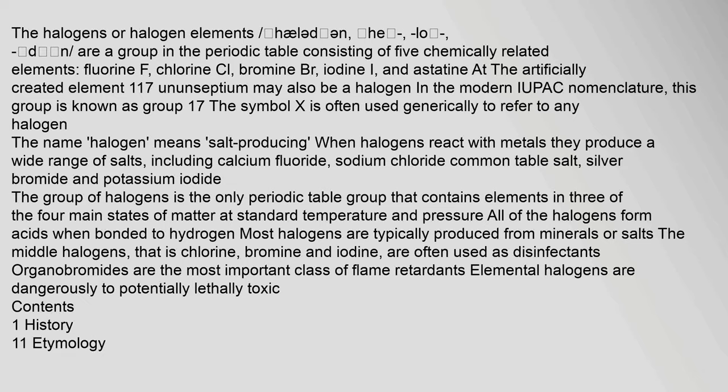The halogens or halogen elements are a group in the periodic table consisting of five chemically related elements: fluorine (F), chlorine (Cl), bromine (Br), iodine (I), and astatine. The artificially created element 117, Ununseptium, may also be a halogen in the modern IUPAC nomenclature. This group is known as group 17. The symbol X is often used generically to refer to any halogen.